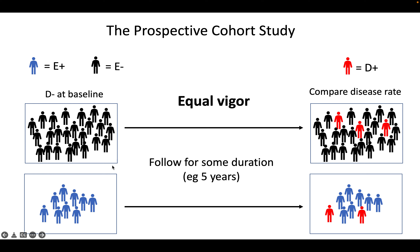Equal vigor is a concept that applies here: when looking for disease, you want to look just as hard in the exposure-negative group as in the exposure-positive group. If there are more frequent visits or more intensive screening in the exposed group, that creates information bias — you're more likely to catch disease there, making the effect look stronger. One way to avoid this is blinding investigators to which exposure group participants are in.